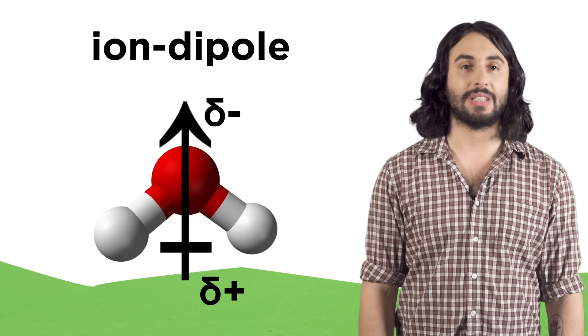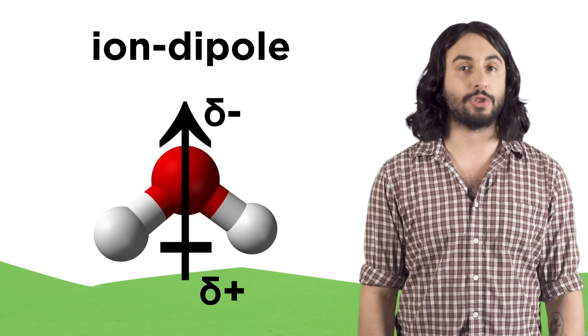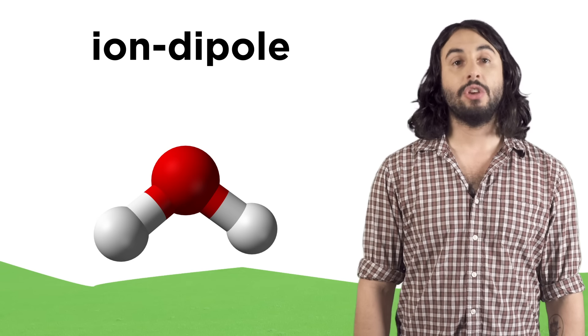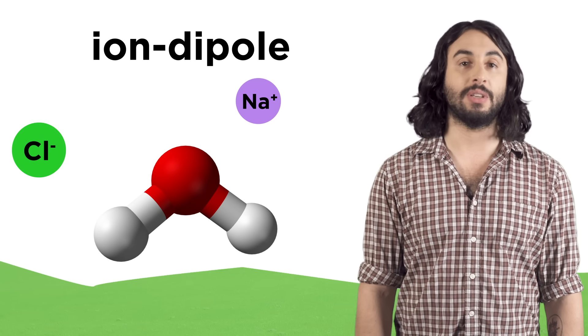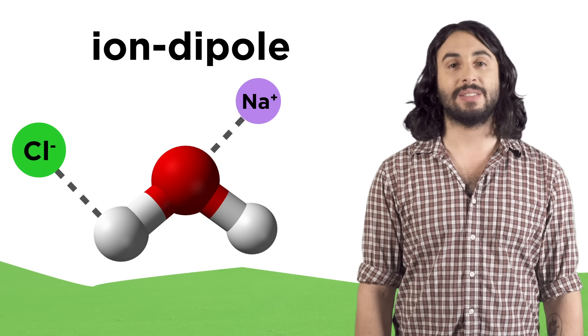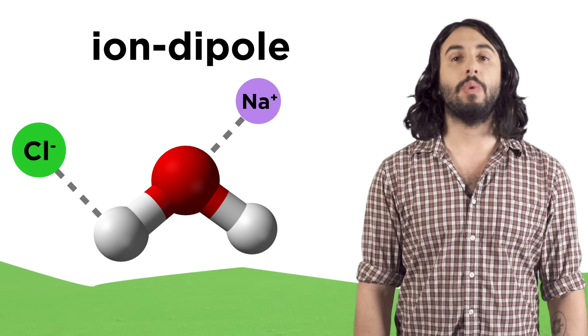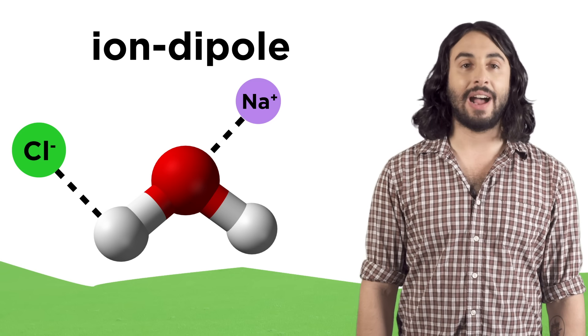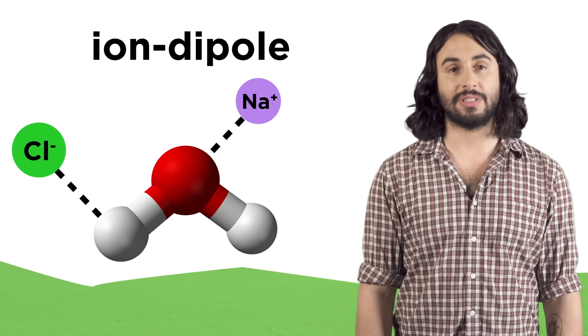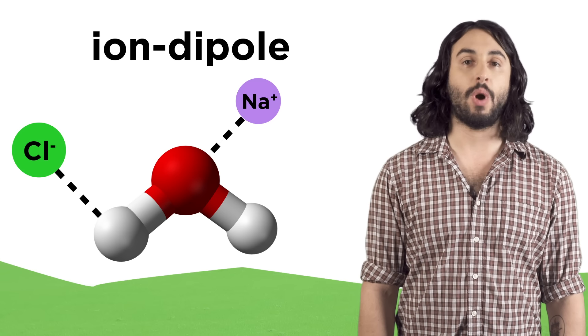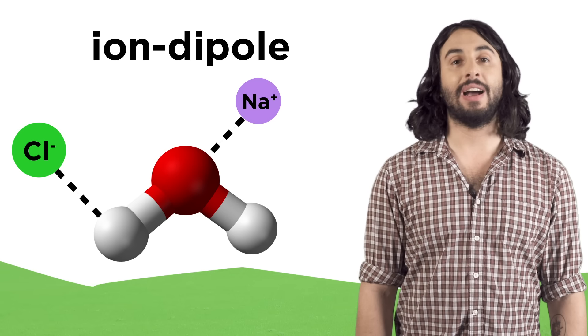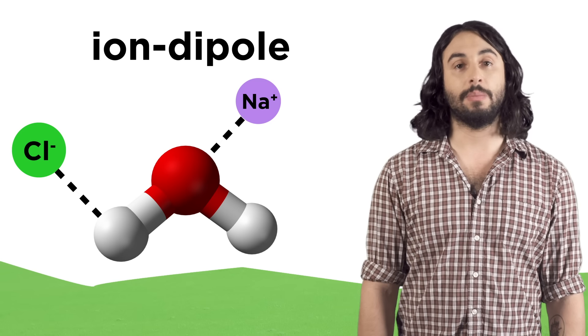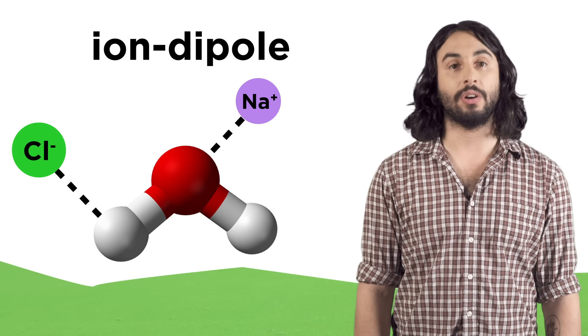Dipoles can make electrostatic interactions because the partially negative side is attracted to positive charges and the partially positive side is attracted to negative charges. So when sodium chloride dissolves in water, the sodium ions make ion-dipole interactions with the negative side of water's dipole and the chloride ions make ion-dipole interactions with the positive side of water's dipole. Each ion can make several of these interactions which store a lot of energy, which is why sodium chloride will dissociate in water in the first place.